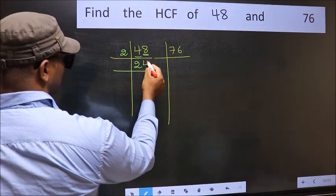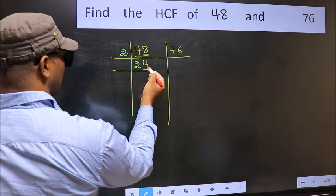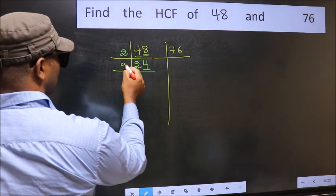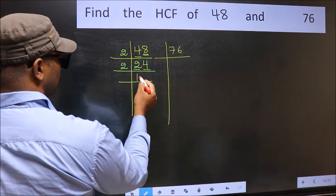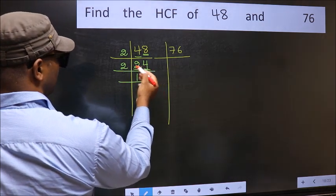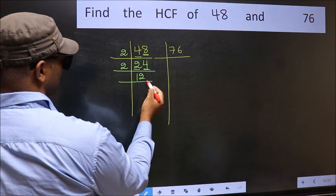Now last digit 4, even, so take 2. First number 2, when do we get 2 in 2 table? 2 times 1 is 2. The other number 4, when do we get 4 in 2 table? 2 times 2 is 4.